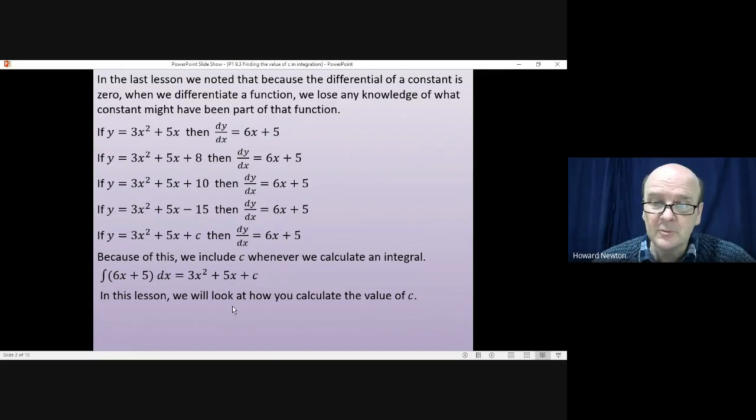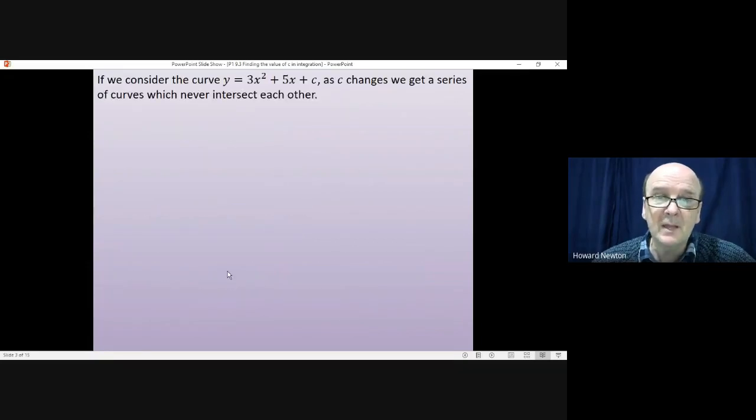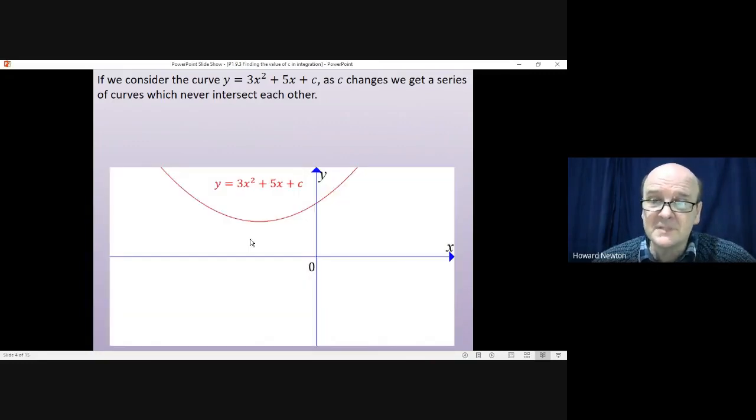If we consider the curve y = 3x² + 5x + c, as c changes in value what we get are a series of curves that never intersect each other. So if c was equal to 6 you get a curve like that, if c was equal to 4 you get this curve beneath it, c equals 2 you'd get that, if c was equal to 0 then you get the curve that goes through the origin.